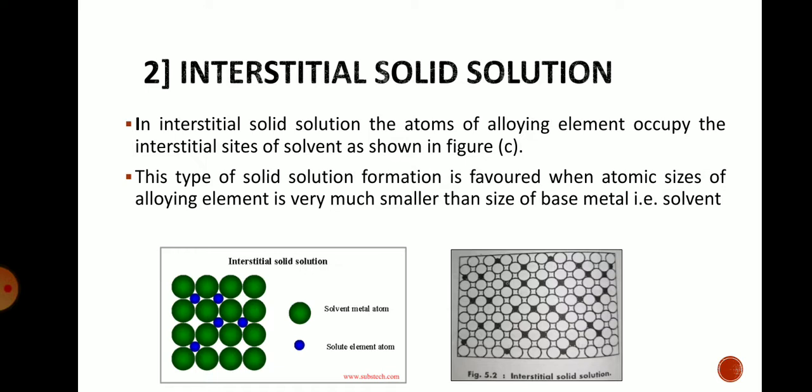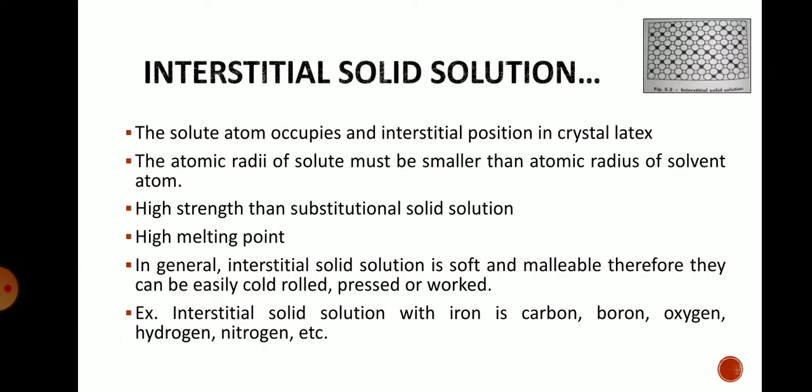Interstitial solid solution formation is favored when the atomic size of the alloying element is very much smaller than the size of the solvent, so that the solute atoms can occupy the gaps between the solvent metallic atoms. The atomic radius of the solute must be smaller than that of the solvent atom. Interstitial solid solutions have higher strength than substitutional solid solutions.